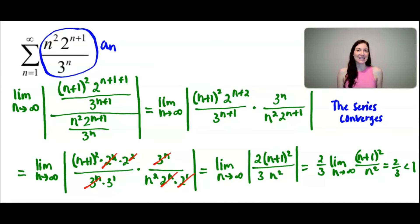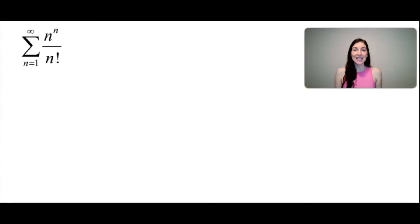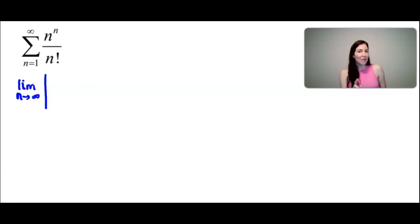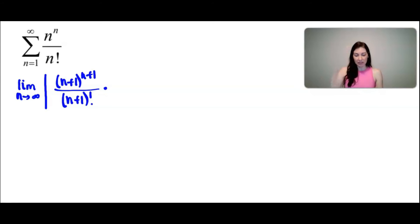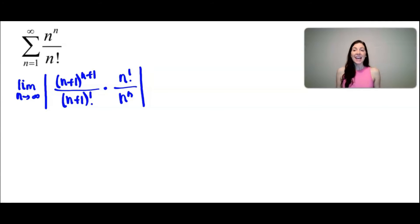Let's take a look at a second example. Again, let's use the ratio test to determine whether this series converges or diverges. We'll find the limit as n approaches infinity of the absolute value. I'm going to jump to the step where I'm already multiplying by the reciprocal. The a_(n+1) term is (n+1)^(n+1) over (n+1) factorial, and I multiply by the reciprocal of the a_n term. I mentioned that the ratio test is perfect for problems involving exponentials or factorials — and this one involves both of them.